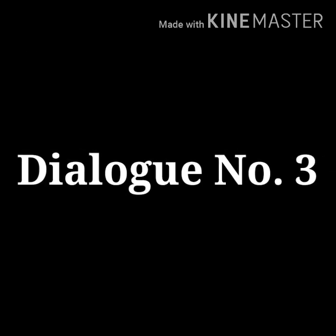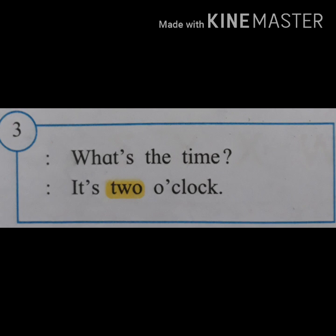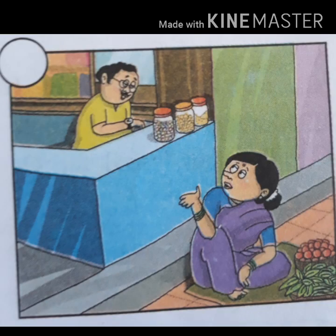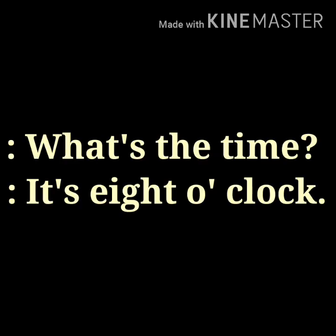Dialogue number three: 'What's the time?' 'It's 2 o'clock.' In this dialogue, one person is asking the time to another person. This picture is suitable for this dialogue and the proper number is 3. Now use your own words and make a dialogue like this: 'What's the time?' 'It's 8 o'clock.'